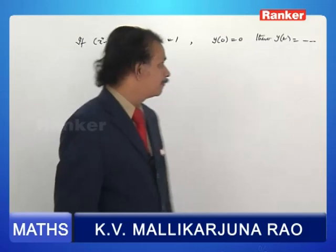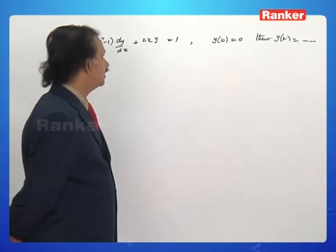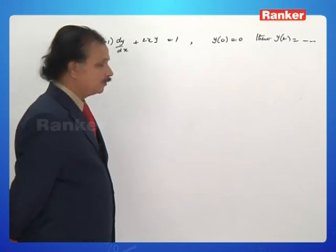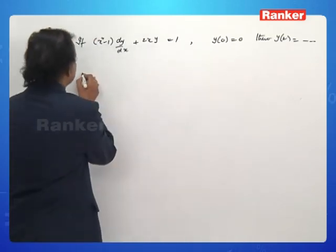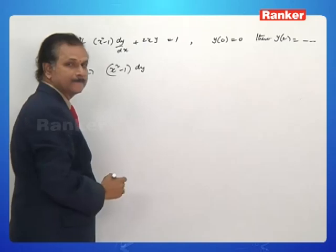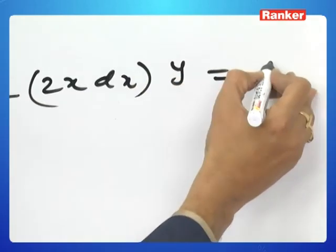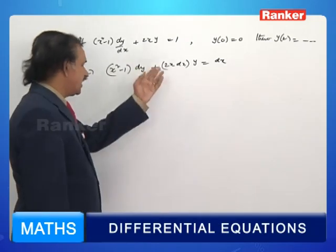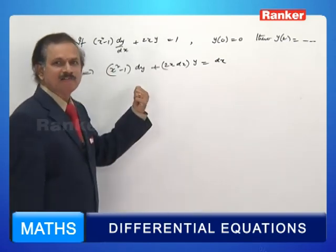The next problem: (x²-1)·dy/dx plus 2xy equals 1, with y(0) equals 0. Find y(2). Rearranging: (x²-1)dy plus 2x·dx·y equals dx. Notice this is the derivative of the product (x²-1)·y.